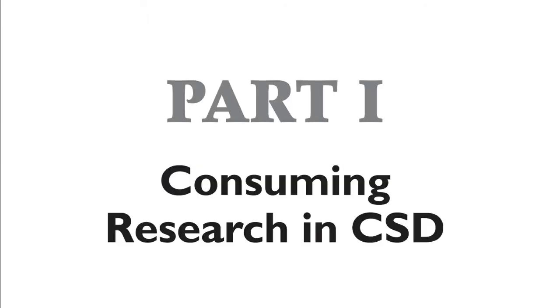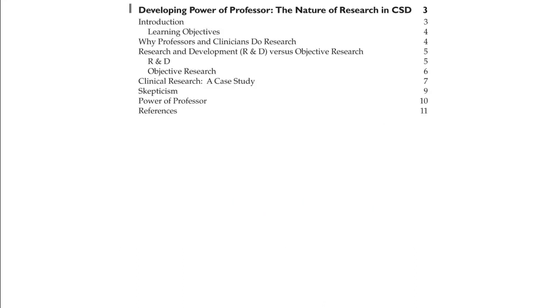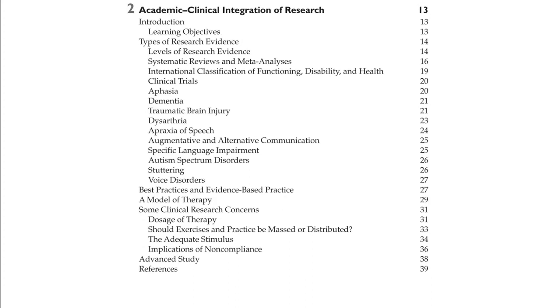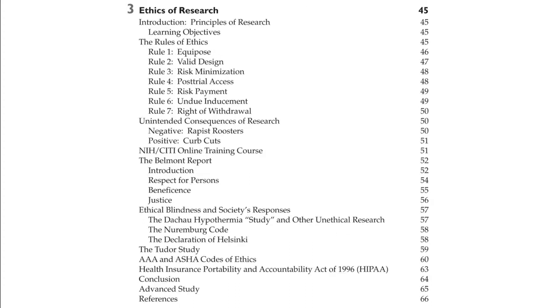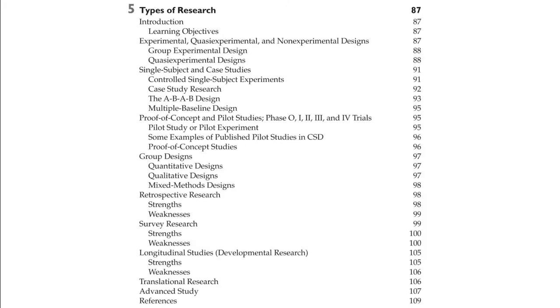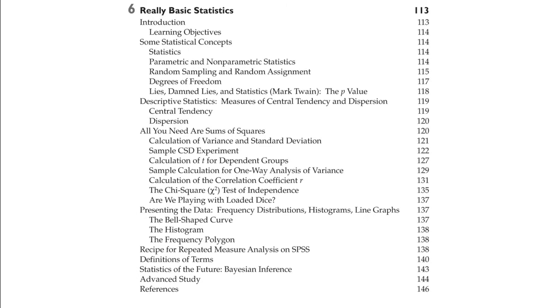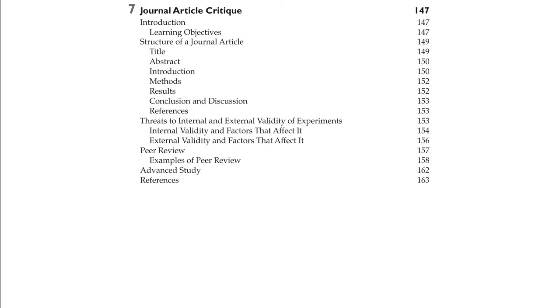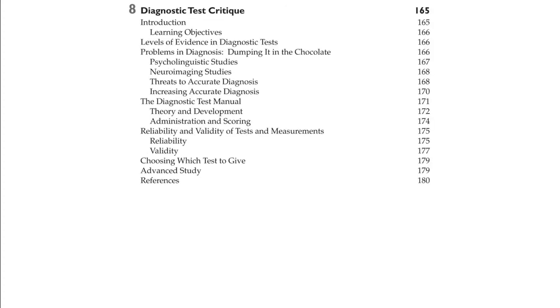The book has three sections. In the introduction, we see how good therapy can also be good research done with a population of one person. Other chapters include academic-clinical integration, ethics of research, types of research, and the scientific method. The first section concludes with chapters on basic statistics, critiquing a research journal article, and critiquing a diagnostic test.